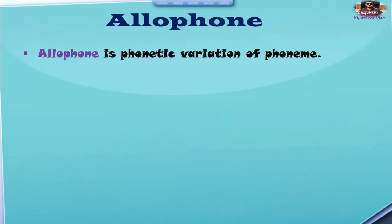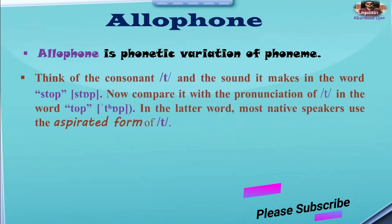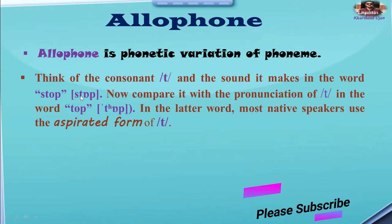So what is an allophone? An allophone is a phonetic variation of a phoneme — meaning the same phoneme is pronounced differently. Think of the consonant /t/ and the sound it makes in the word 'stop.' Now compare it with the pronunciation of /t/ in the word 'top.' In the later word, most native speakers use the aspirated form of /t/. So the same phoneme /t/ is pronounced differently in different words. Aspirated means that when the word is pronounced, a puff of air comes out of the mouth. Such sounds are known as aspirated sounds.